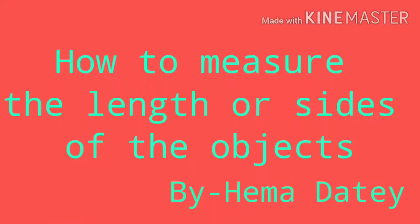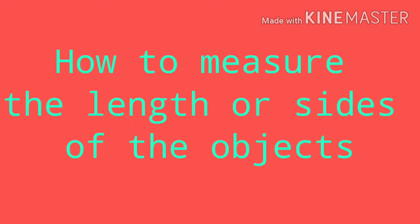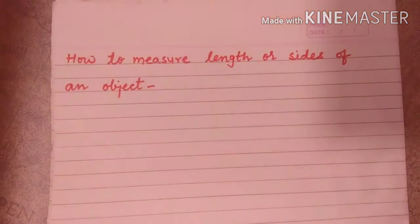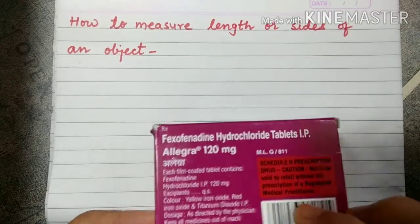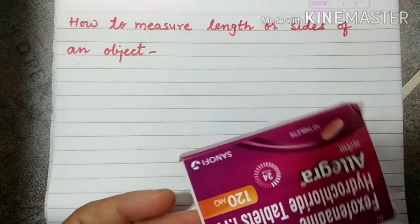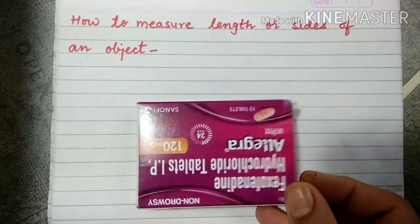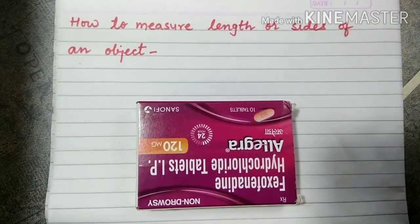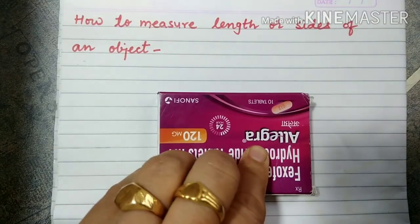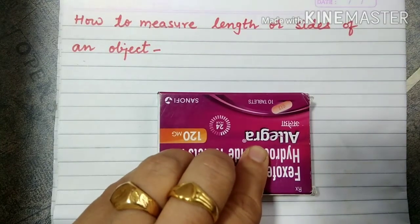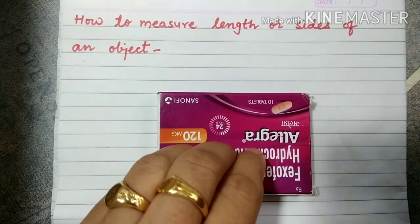Hello everyone, today we will learn how to measure the length or the sides of an object. So let's start. I have taken this box — let's measure the length of its sides. Place the object on a plane surface and hold it firmly.